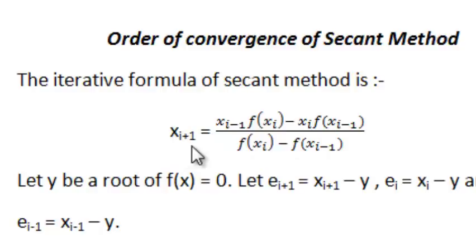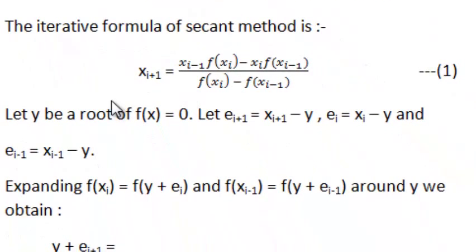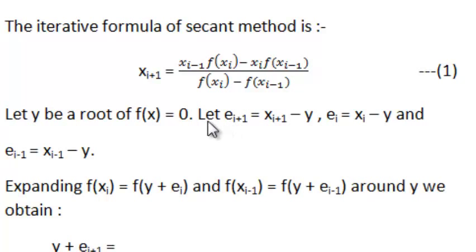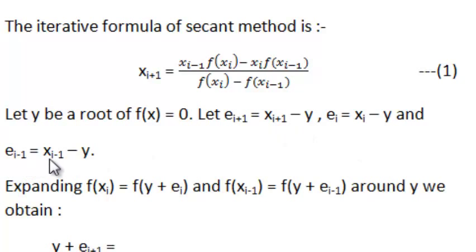We calculate each term using its previous terms and the value of the function at those terms. Now let y be a root of this function, where f of y equals 0. On calculating these terms we get some error in finding our root, so we denote this error by E. So E of i plus 1 equals x of i plus 1 minus y, E of i equals x_i minus y, and E of i minus 1 equals x of i minus 1 minus y.